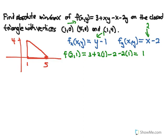Now we'll compare that to our boundary values to see which is the absolute max and which is the absolute min. To test these boundaries, we think of them as lines. The bottom one is where y is always 0 and x goes between 1 and 5. The vertical one is any point (1, y) where x is always 1 and y goes between 0 and 4. The diagonal line is y equals negative x plus 5 — a slope of negative 1 — and since both coordinates change, we'll use substitution.